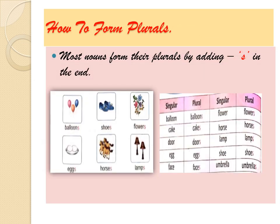Now we will study how to form plurals from singular to plural. Rule number one: most nouns form their plurals by adding S at the end. By adding S, we are changing the word from singular to plural. For example: balloon/balloons, cake/cakes, door/doors, egg/eggs.